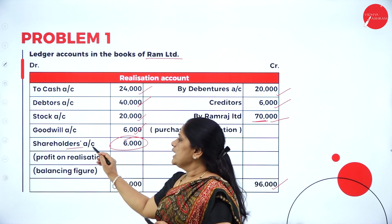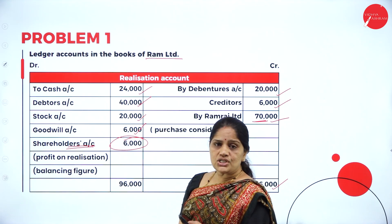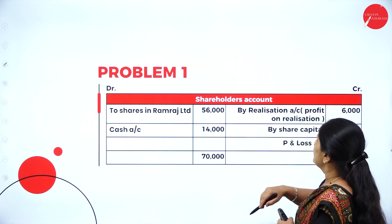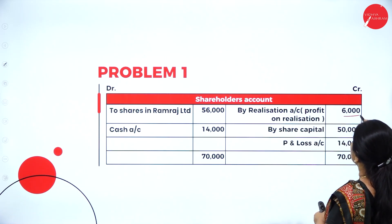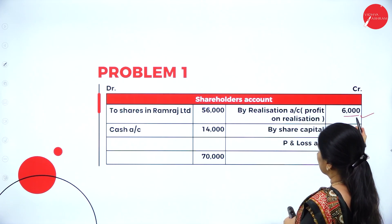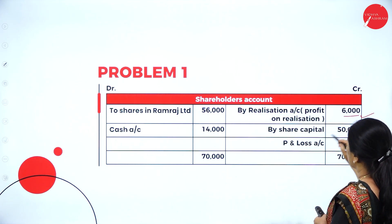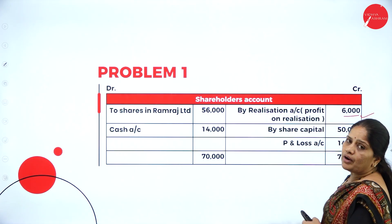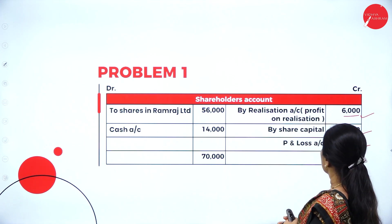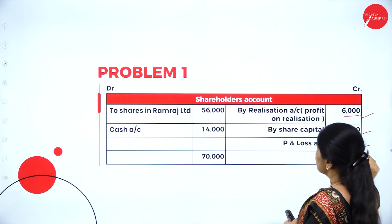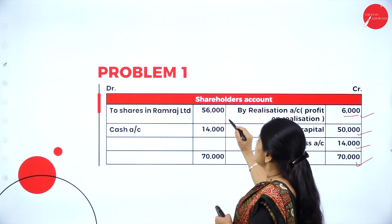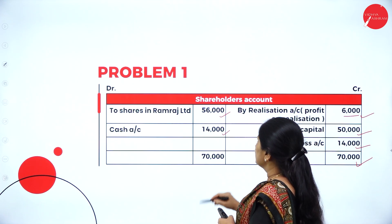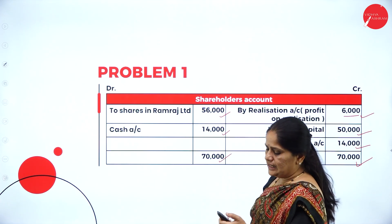The profit on realization is transferred to the shareholders account. In the shareholders account, we credit the realization profit, then share capital 50,000, and the profit and loss account balance. The total comes to 70,000. This is settled as shares amounting to 56,000 and cash account 14,000, totaling 70,000.